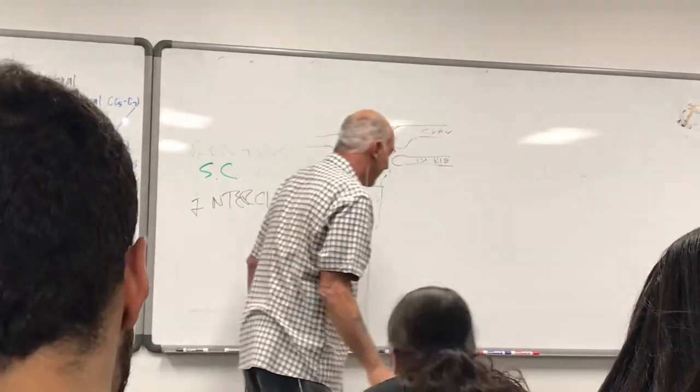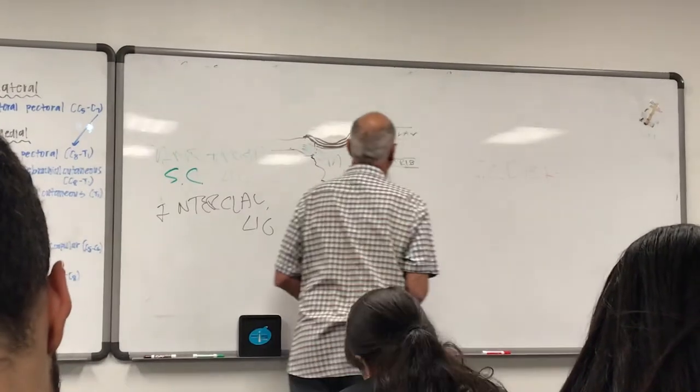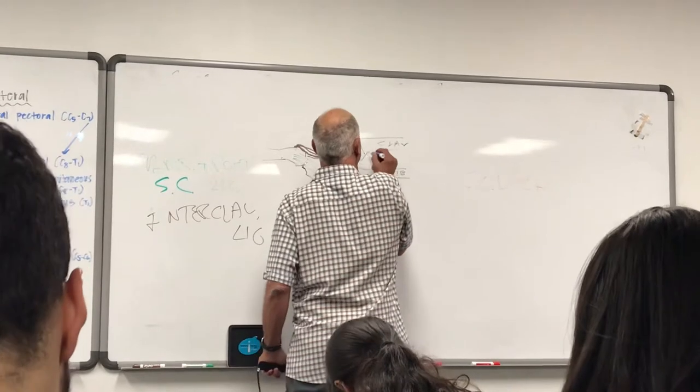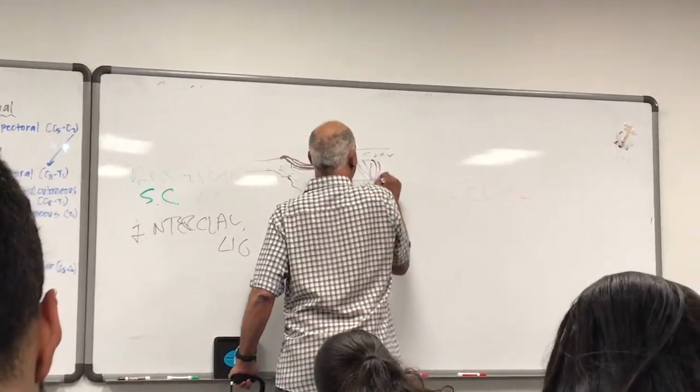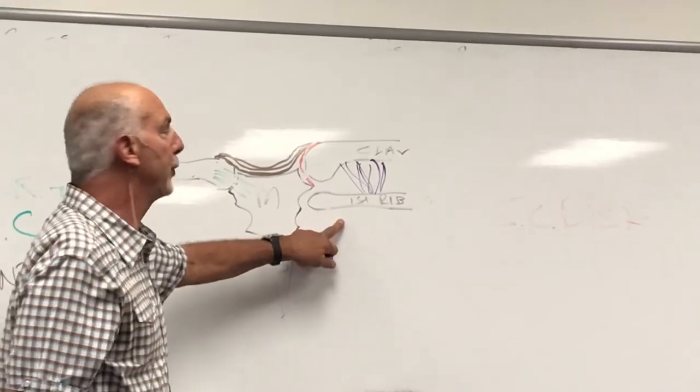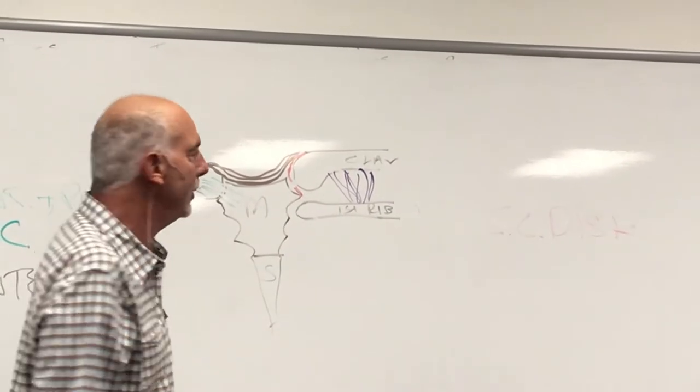And finally, then we have the costoclavicular ligament. It's got fibers that run like this, attaching the superior surface of the first rib to the inferior surface of the clavicle.